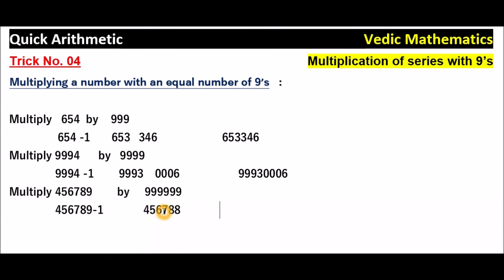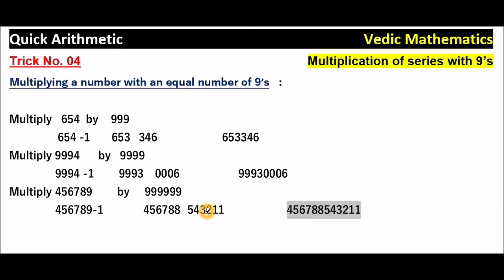So subtract this resultant number 456788 from 999999. 9 minus 4 is 5, 9 minus 5 is 4, 9 minus 6 is 3, 9 minus 7 is 2, 9 minus 8 is 1, 9 minus 8 is 1. Just write 543211. So the answer is 456789 into 999999 is equal to 456788 543211. This is the answer.